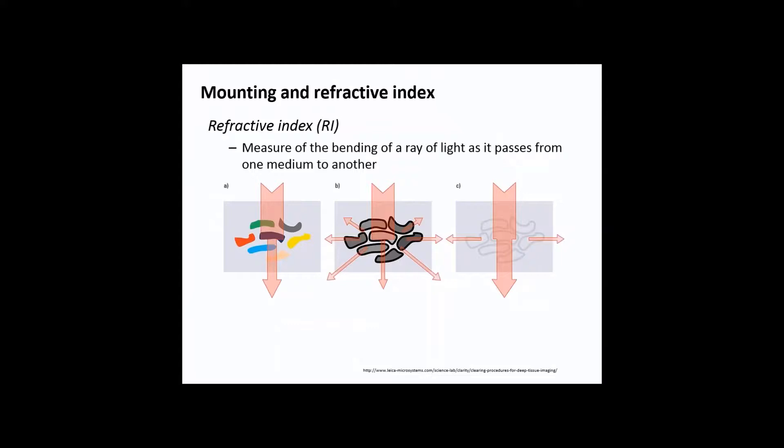After doing this, we talk about mounting and refractive index. I'm talking about refractive index because this is a very important concept for 3D imaging. Refractive index is the measure of the bending of a ray of light as it passes from one medium to another. When leaf material is not cleared, it contains pigment and light is absorbed with no bending. When you have tissue clarified but mount it in a solution not compatible with its refractive index, the bending of light is all throughout and the result is a blurry image. But when you mount your clarified tissue in a solution compatible with its refractive index, the light only bends in a certain direction and you get a very resolved and sharp image.